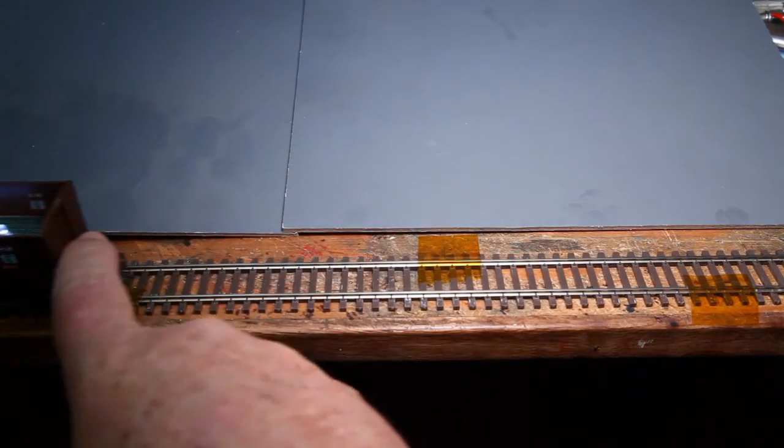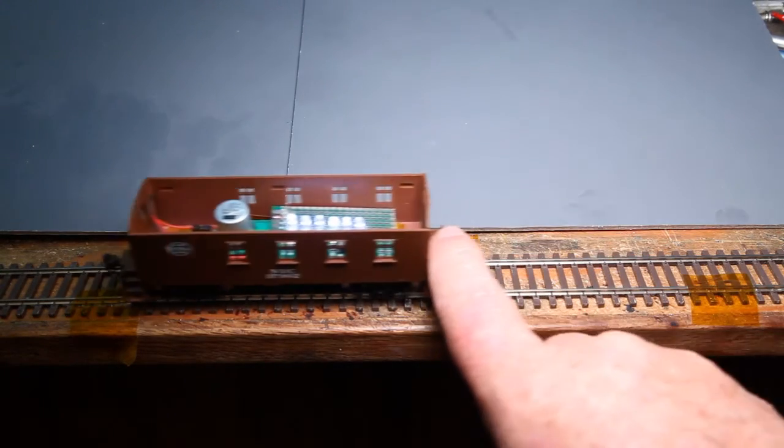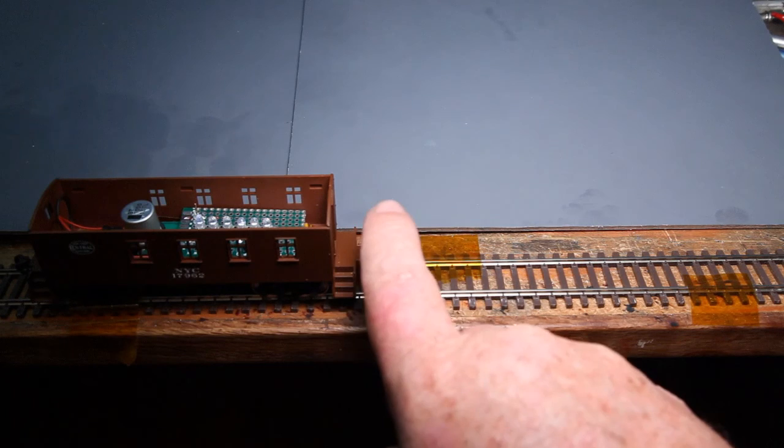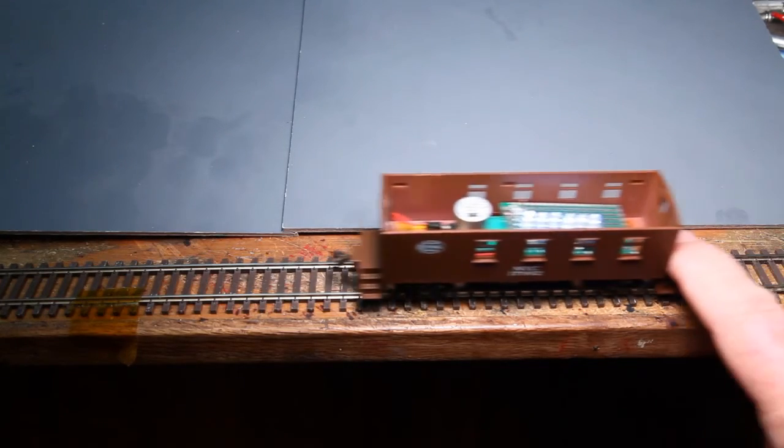Now we're going to put the module inside an old caboose. You can see the tape on the rail acting as the blocks. If I stop it over the tape, and sure enough, it goes off. That's a 1,000 microfarad capacitor in it, so it's not very much.